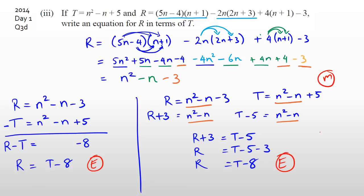Here's another method: since both expressions share N² minus N, you can write N² minus N equals R plus 3 from the first equation, and N² minus N equals T minus 5 from the second. Because these are equal to each other, R plus 3 equals T minus 5, which rearranges to R equals T minus 5 minus 3, giving R equals T minus 8. A student asks why it's T minus 5 — because moving plus 5 to the other side makes it minus 5. And negative 3 minus 5 gives negative 8.